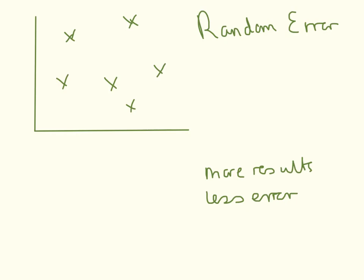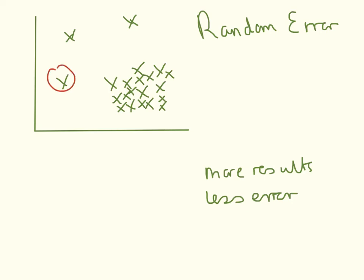A random error is more likely to happen in your practical. What you can do about this is perform more experiments — a larger number of repeats. You should start to see a pattern where most results become clustered in the same place, and you can see that the ones in a different place are clearly the anomalies. So by doing more results, you can get a better average and you're going to have less error.